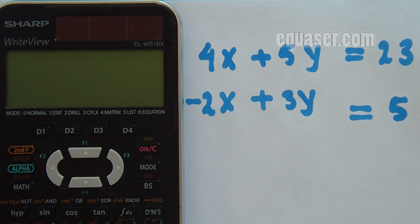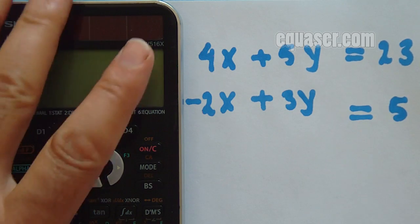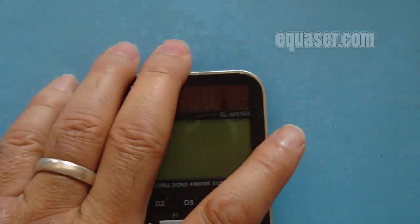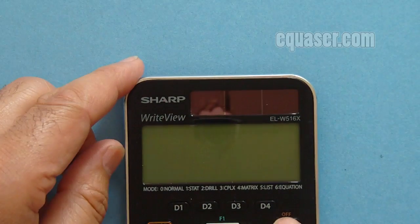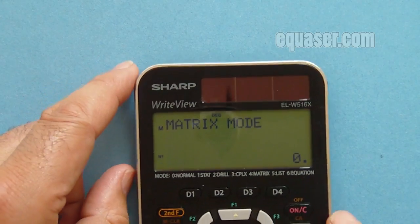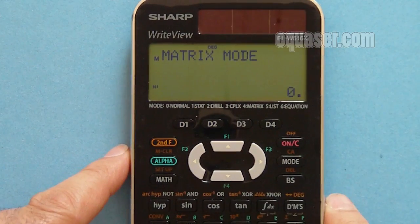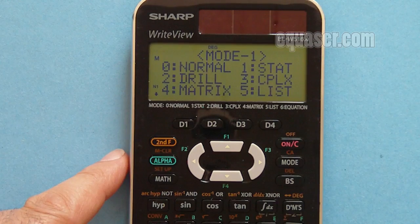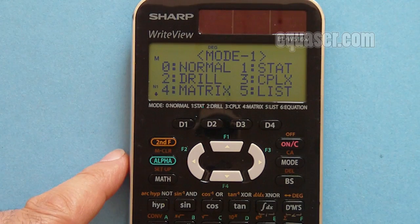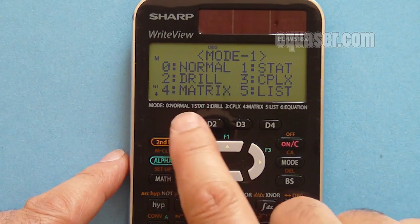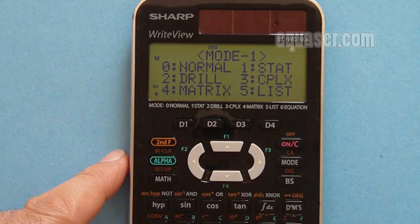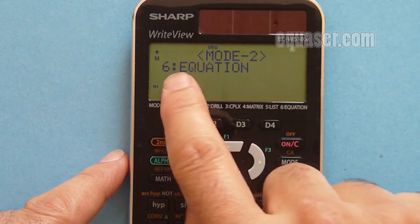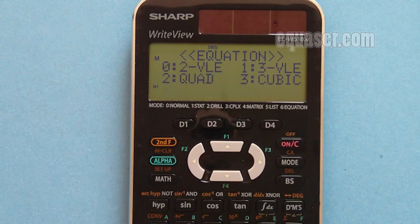I turn the calculator on. I have to go first to normal mode. I press MODE, then I have to go to equation mode and scroll down to equation.